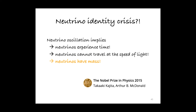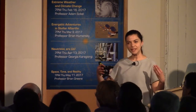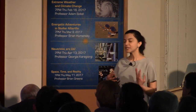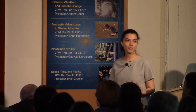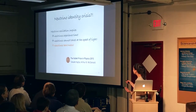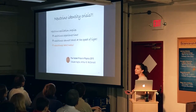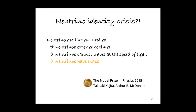This is quite significant. It actually implies that neutrinos have mass — a discovery recognized with the 2015 Nobel Prize in physics. It implies mass because neutrinos have to be able to experience time in order to change from one type to another. And if they experience time, they must be traveling at a speed less than the speed of light. Because if they traveled at the speed of light, time dilation would mean that time for them would essentially stand still.